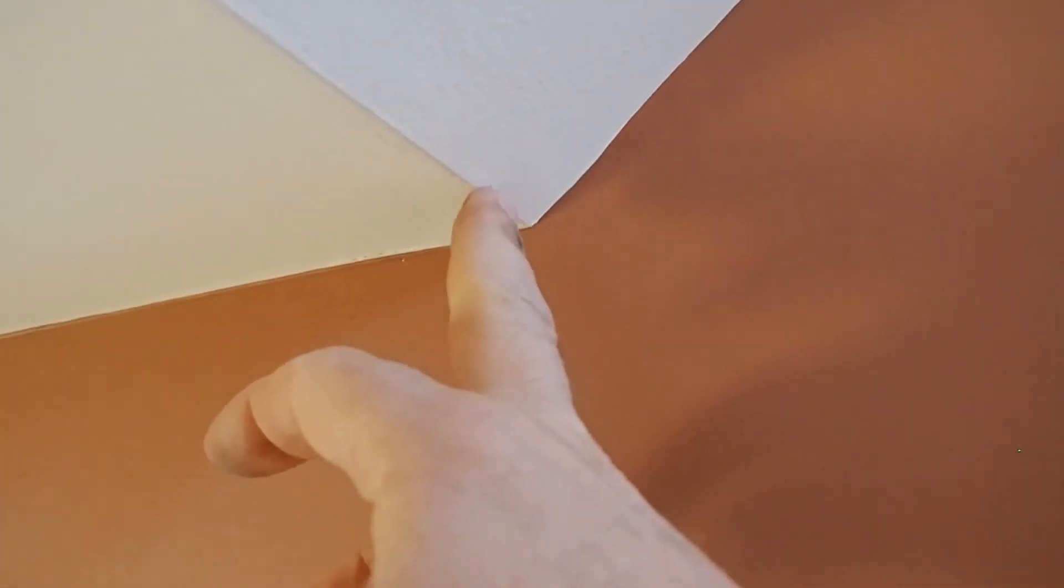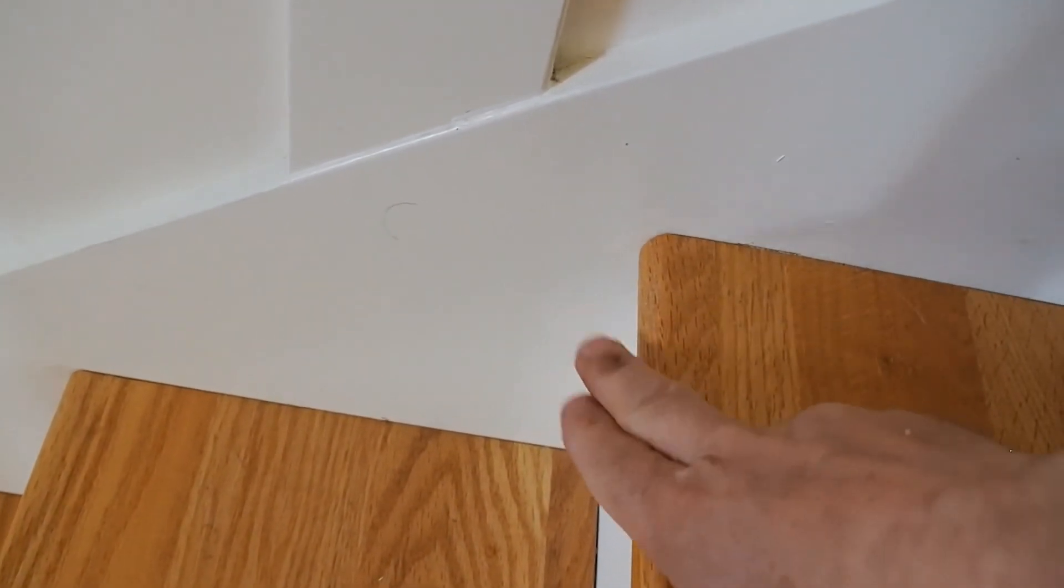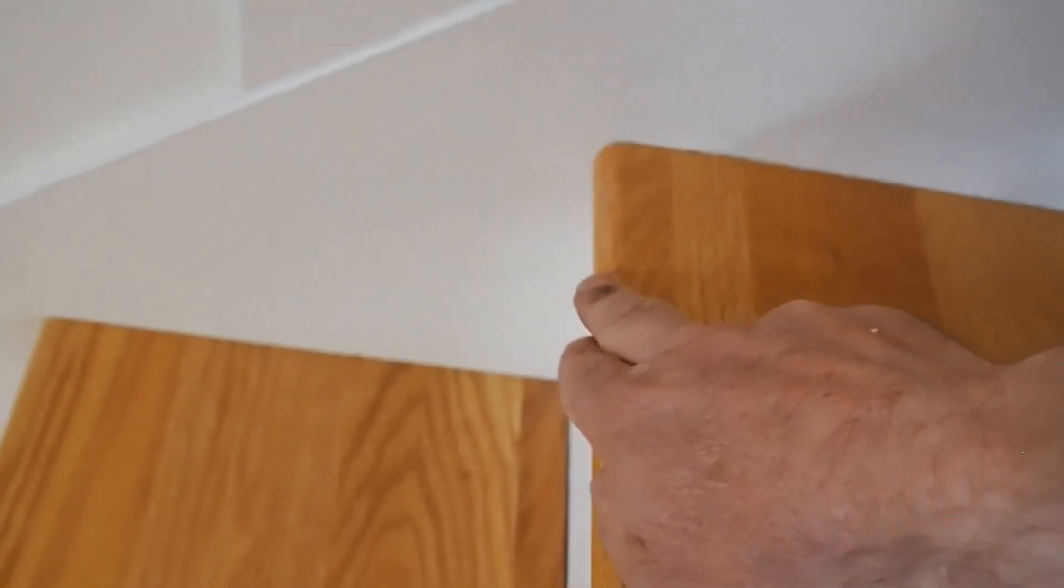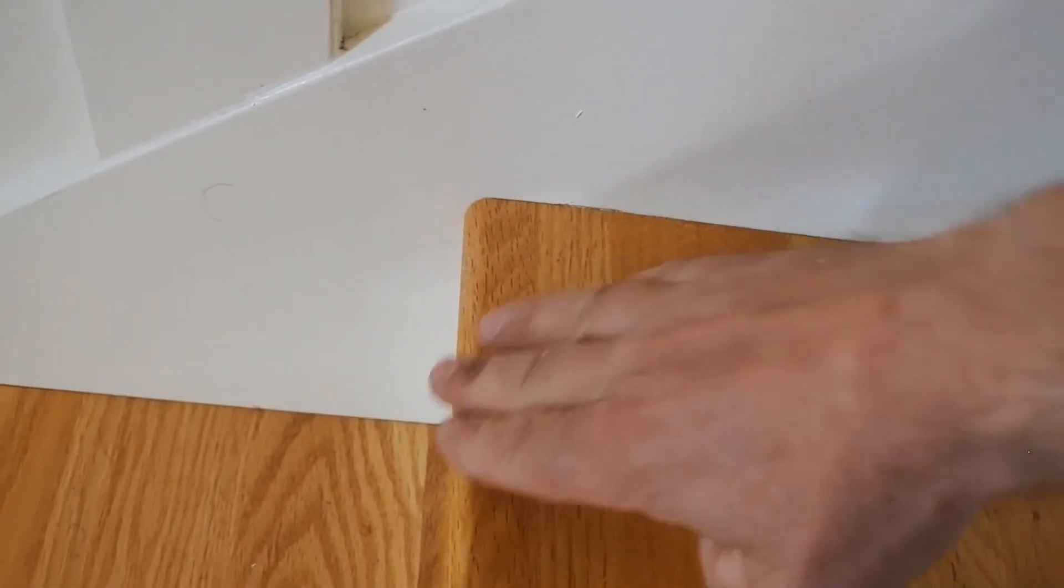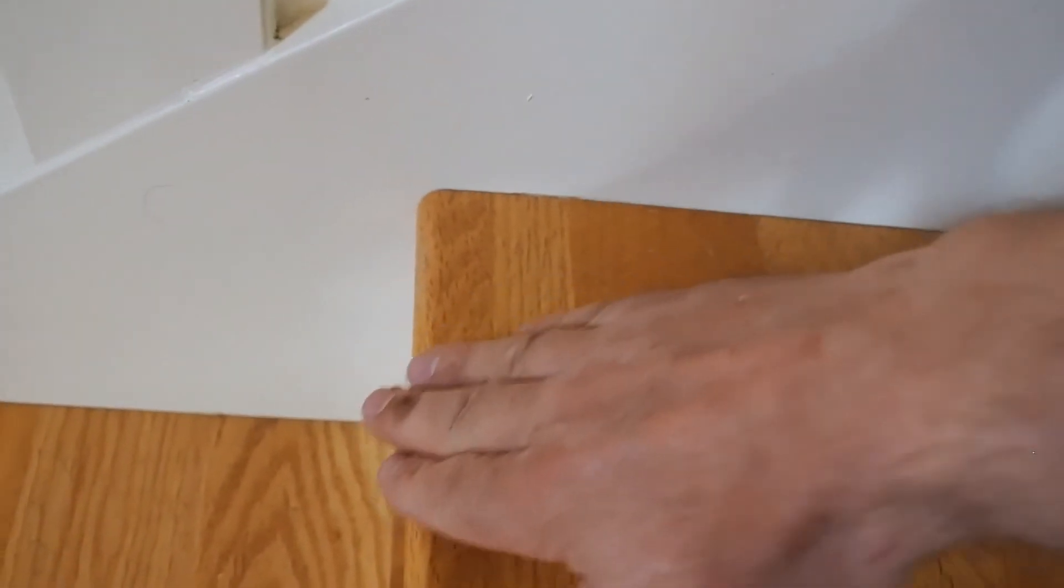During the final inspection after all the finishes have been applied, the building inspector will come and measure down from this spot here, plumb, down to the nosing line. Remember the nosing line goes from nosing to nosing in a straight line. So they're not going to measure to the tread. They're going to measure on a line that goes from nosing to nosing.